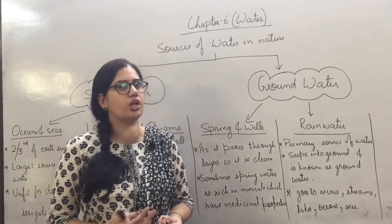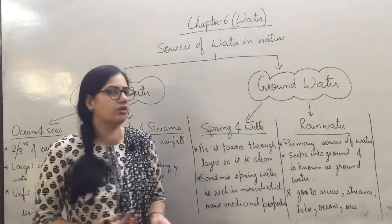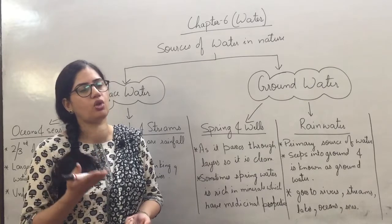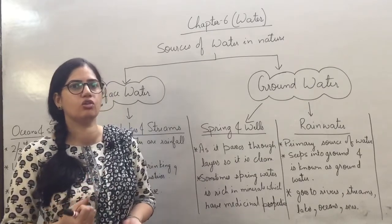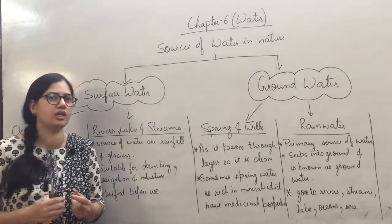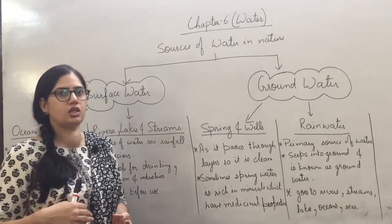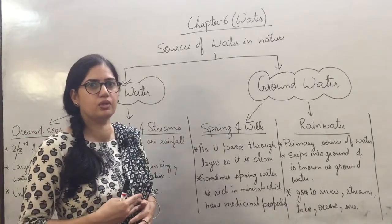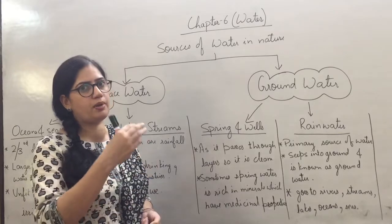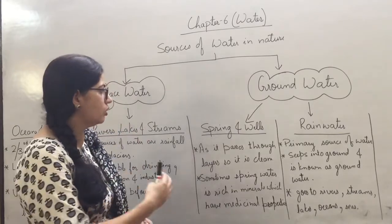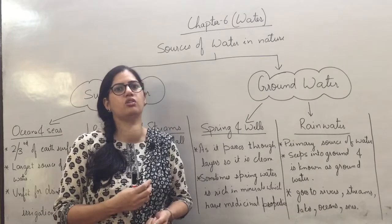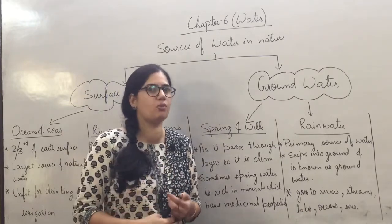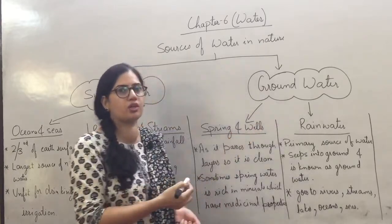When rain falls, it lands on the soil and slowly seeps inside the soil. As the water passes through different layers of soil and rocks — including topsoil and bedrock — all the impurities get filtered out. So it comes out in pure form. Ground water is the purest form of water, and we do not need to purify it before drinking.